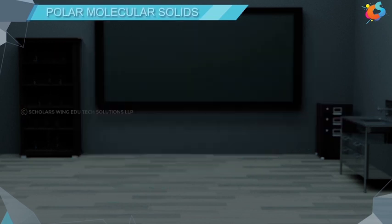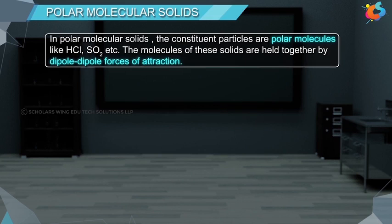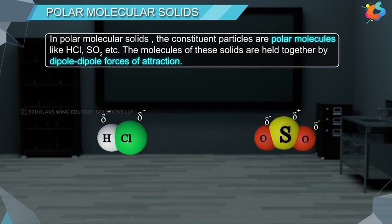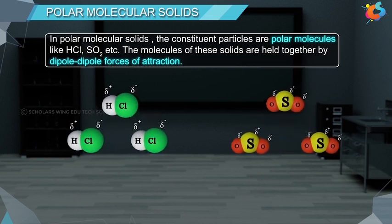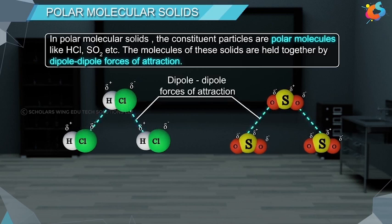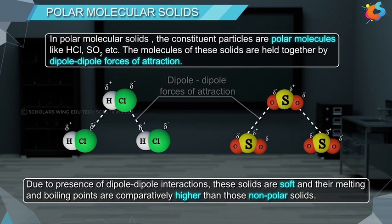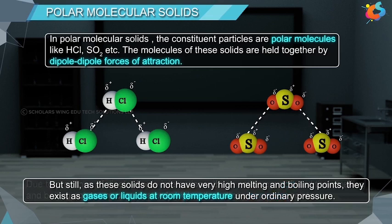In polar molecular solids, the constituent particles are polar molecules like HCl, SO₂, etc. The molecules are held together by dipole-dipole forces of attraction. Due to these dipole-dipole interactions, these solids are soft and their melting and boiling points are comparatively higher than those of nonpolar solids. However, since they do not have very high melting and boiling points, they exist as gases or liquids at room temperature under ordinary pressure.